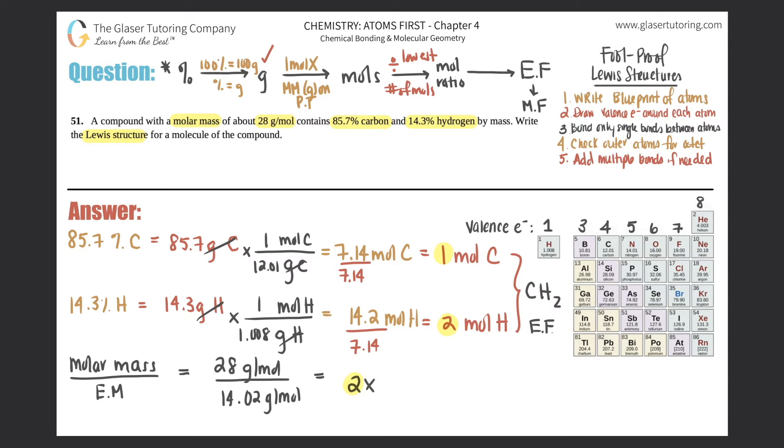So all you have to do is just take that number and distribute it between the subscripts of your empirical formula, which was CH2. So there was one carbon and two hydrogen, so you just times each one by 2. So your new formula would be C2H4.